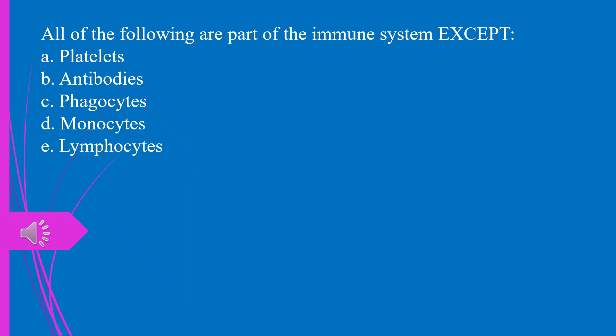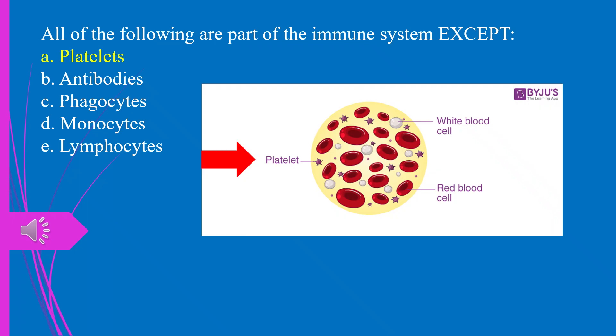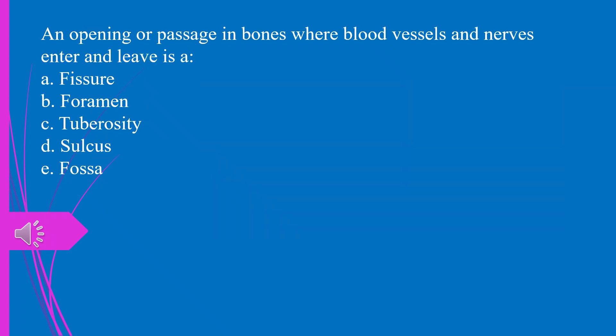All of the following are part of the immune system except, A. Platelets. B. Antibodies. C. Phagocytes. D. Monocytes. E. Lymphocytes. The answer is A. Platelets. Platelets, or thrombocytes, are small colorless cell fragments in our blood that form clots and stop or prevent bleeding.